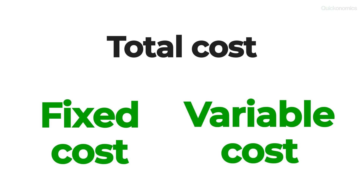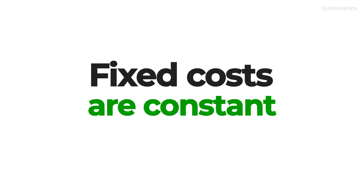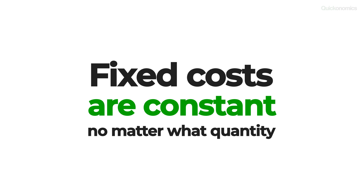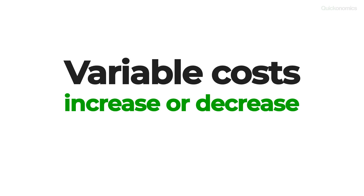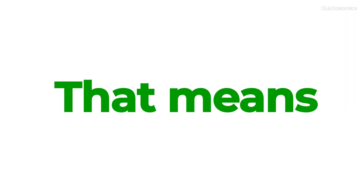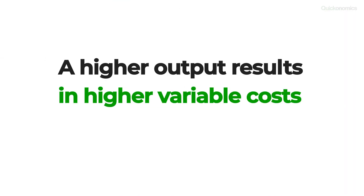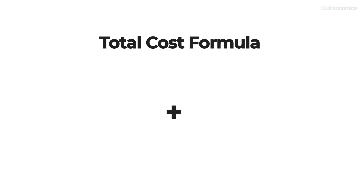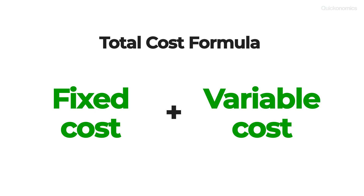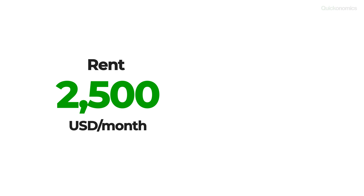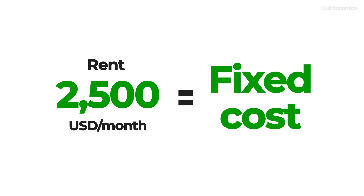Now let's move on to step two: calculating the total cost. Total cost is made up of two parts — fixed costs and variable costs. Fixed costs are constant, which means they are the same no matter what quantity of output is produced. By contrast, variable costs increase or decrease as the quantity changes, meaning higher output results in higher variable costs and vice versa. To calculate the total cost, all we need to do is add up all fixed costs and variable costs. In the case of Average Pizza, the owners have to pay two and a half thousand US dollars a month to rent their location. That's an example of a fixed cost because they have to pay that amount regardless of the number of pizzas they sell.